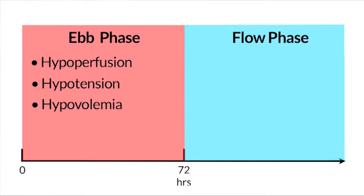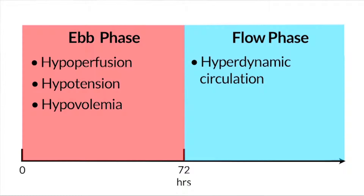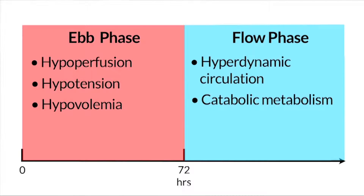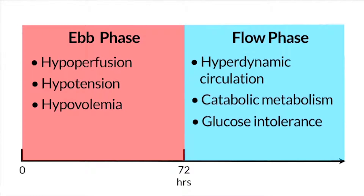He described the flow phase, which follows about 72 hours later in patients who survive the ebb phase. This is a period of increasing hyperdynamic circulation and increasing catabolic metabolism. This flow phase will persist until well after wounds are closed, and in patients with very large injuries can persist a year or so after wound closure. This period is characterized by hyperdynamic circulation, protein catabolism, and glucose intolerance.